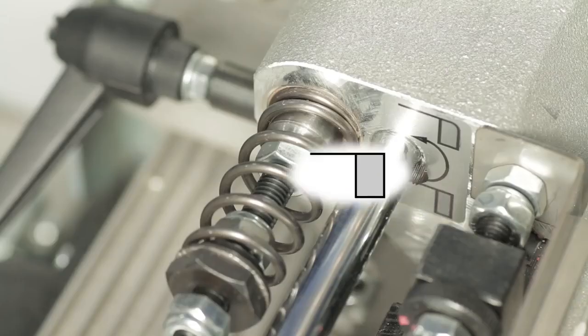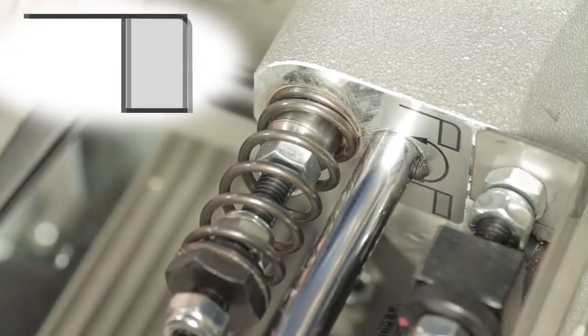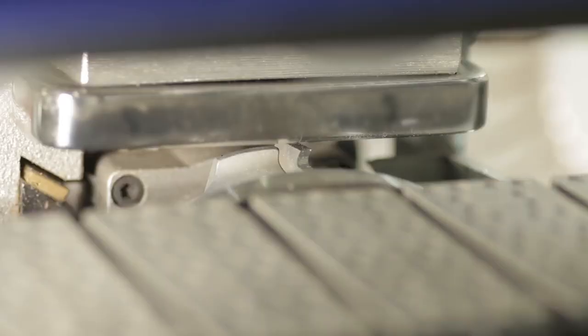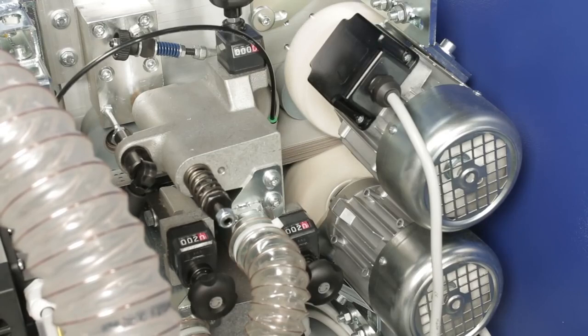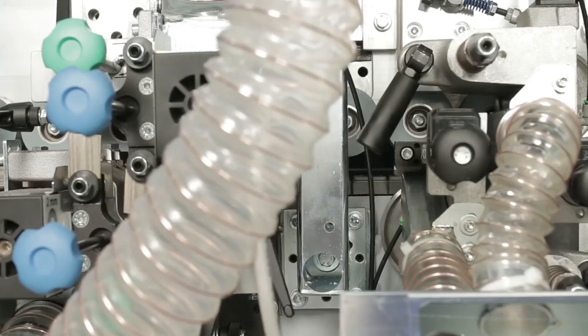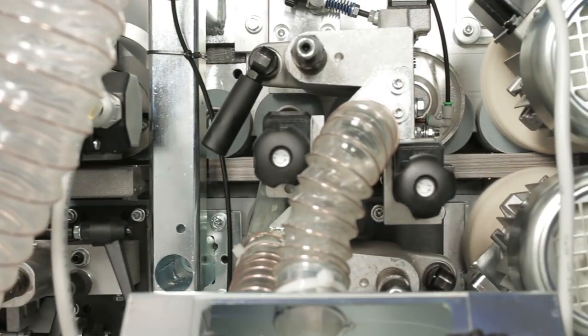The multi-functional trimming unit stands out through extremely fast conversion to flush, radius, and bevel trim. Thanks to the radius scraping unit and the buffing unit, the G330 achieves a perfect finish without reworking.